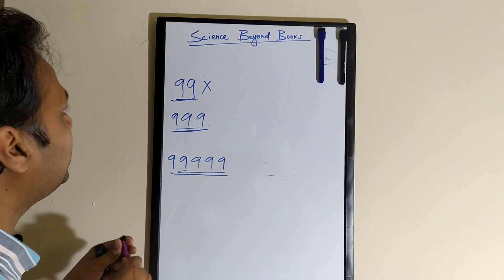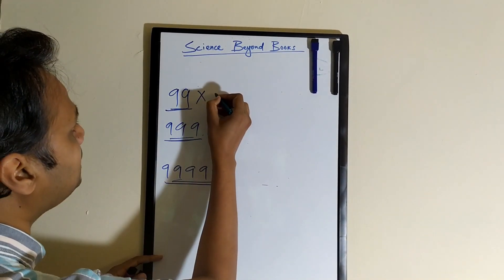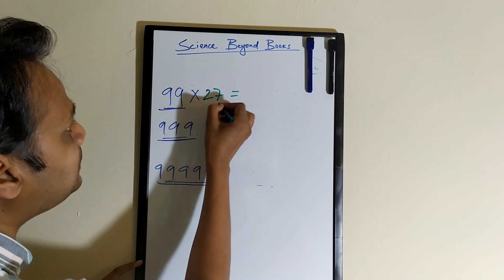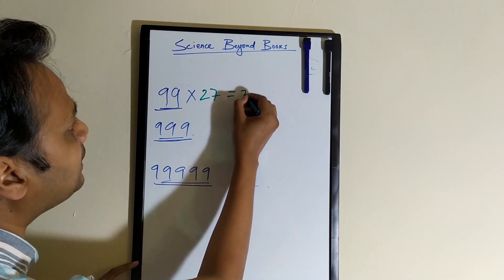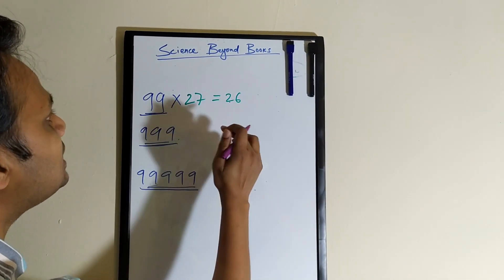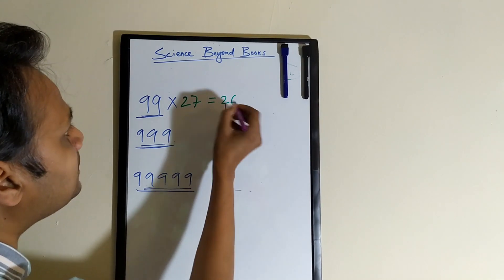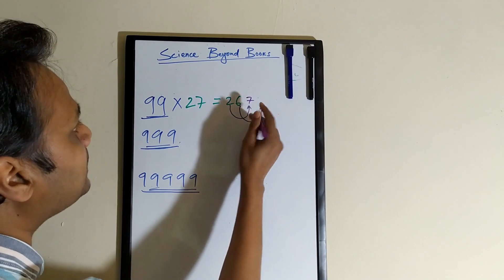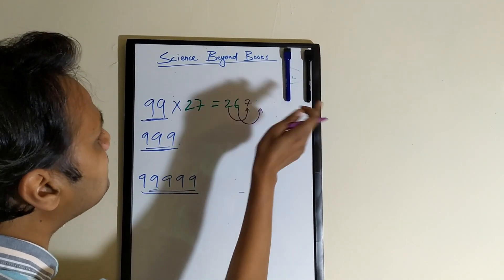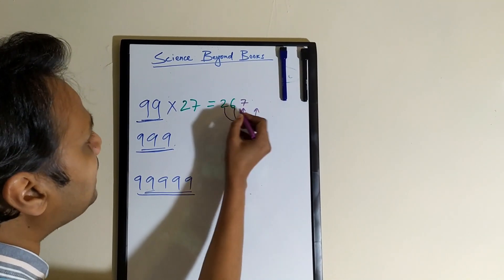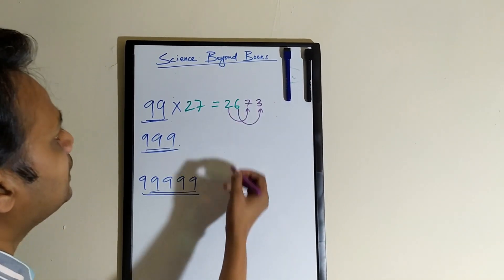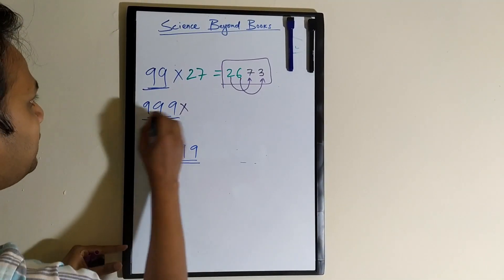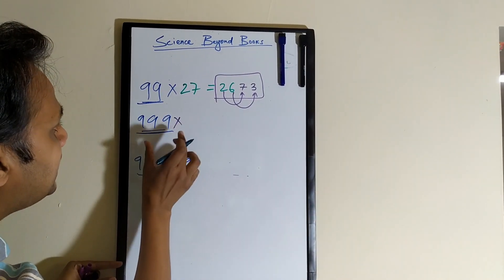Let's try this: if you want to multiply 99 by 27, what will be the answer? The first step is to subtract 1 from this number, so it becomes 26. Second step: subtract each digit of 26 from 9. So 9 minus 2 is 7, and 9 minus 6 is 3. So your answer is 2673.